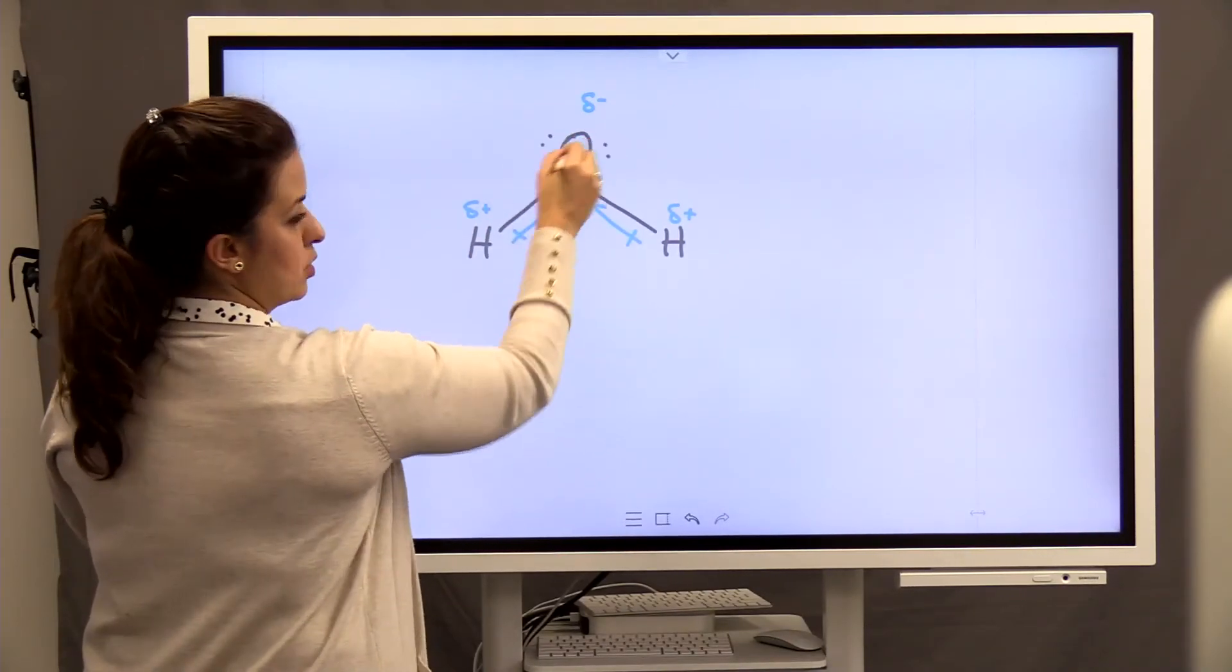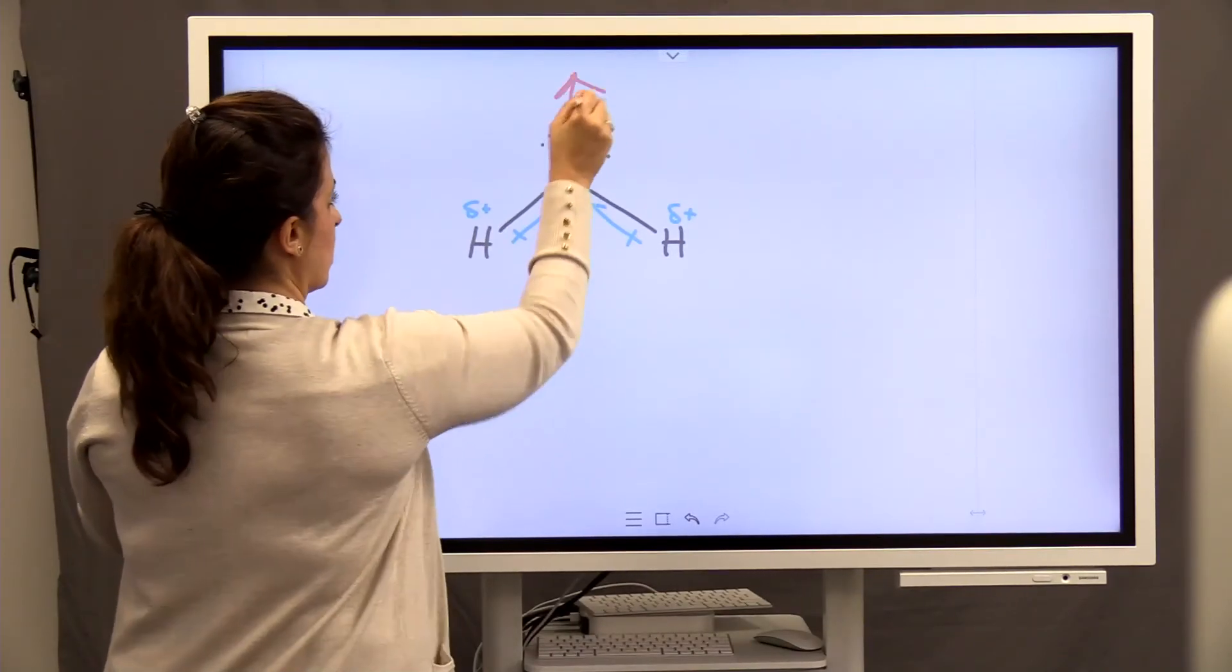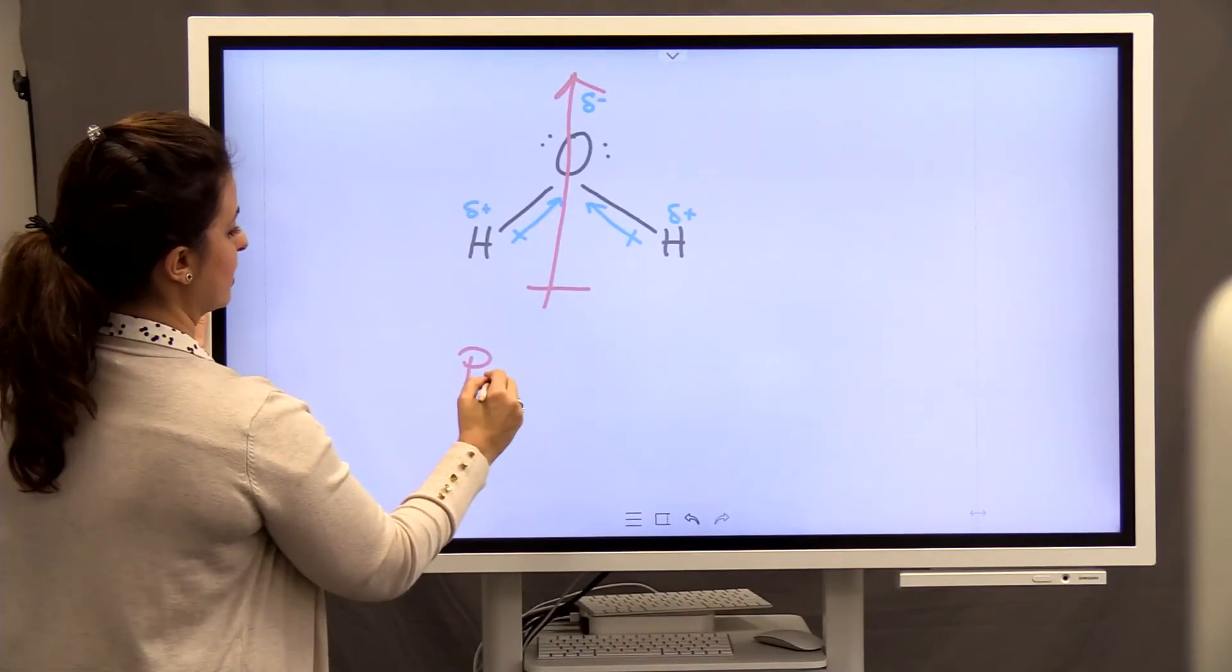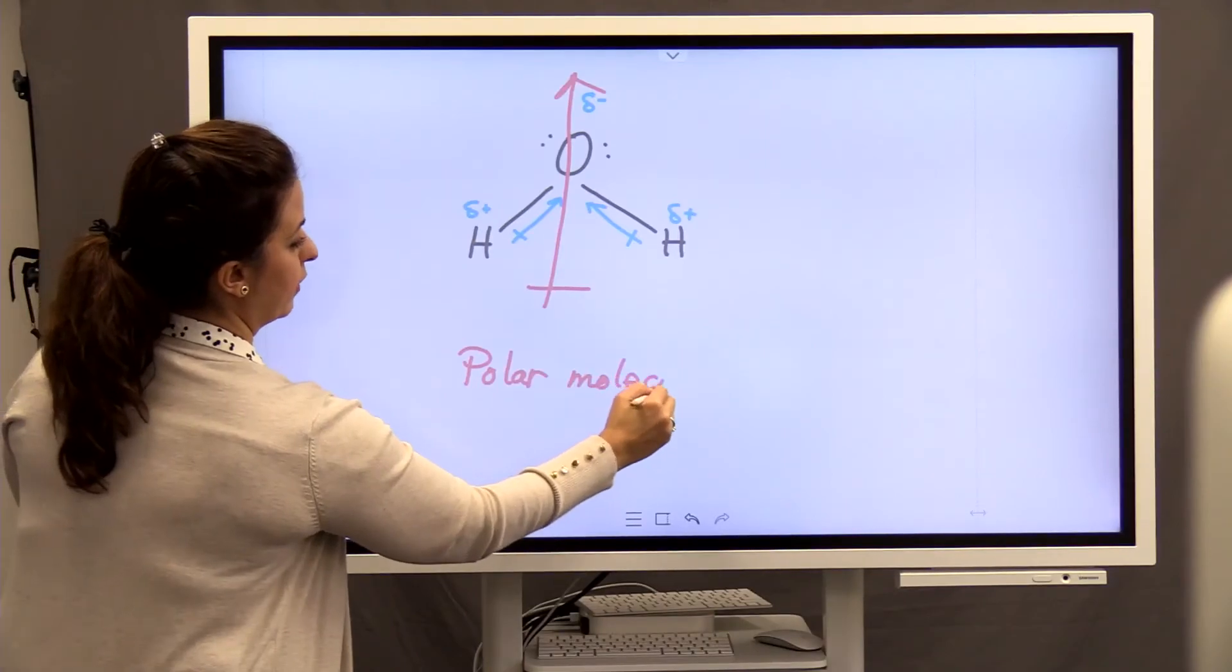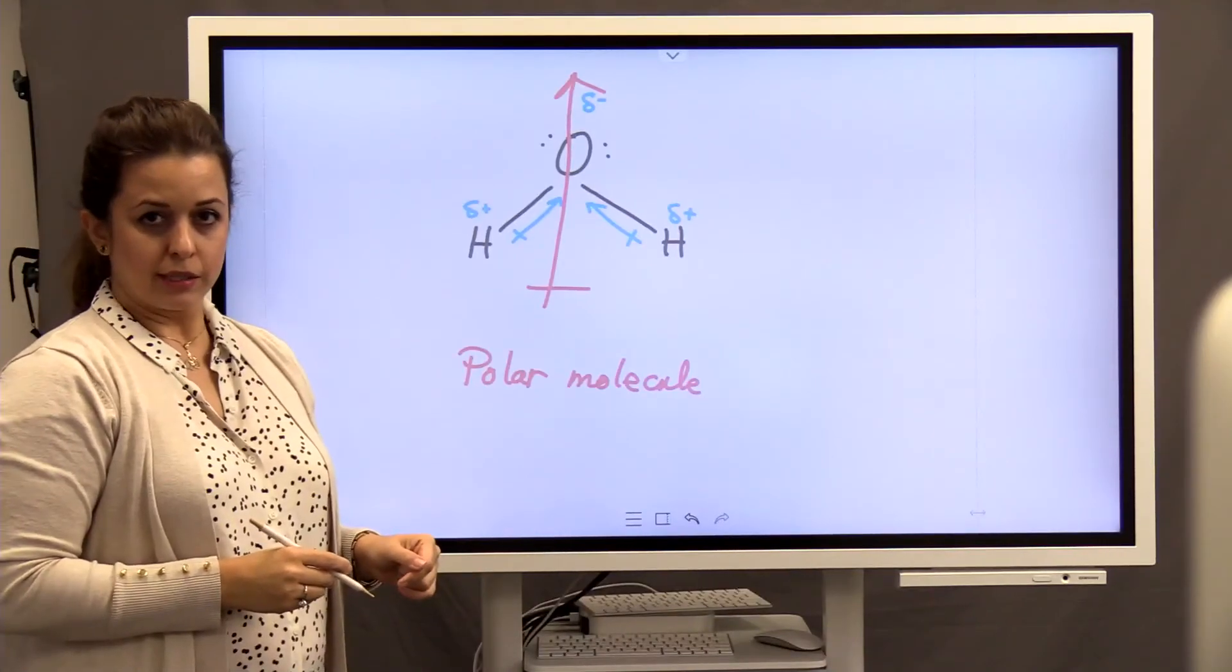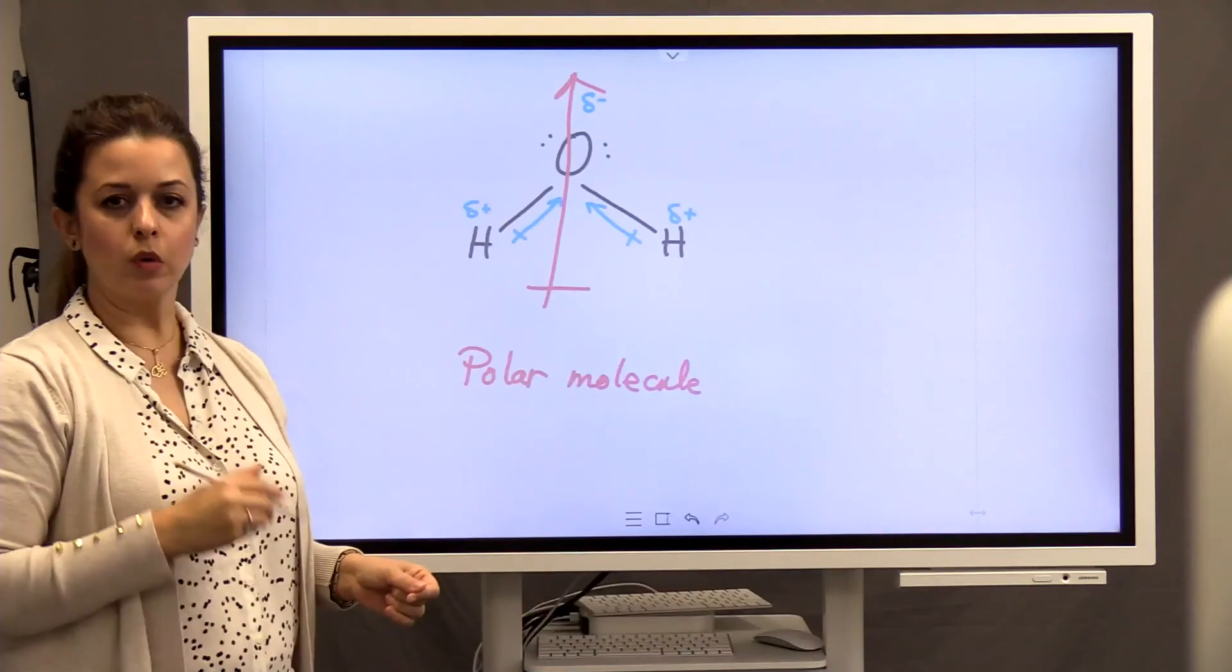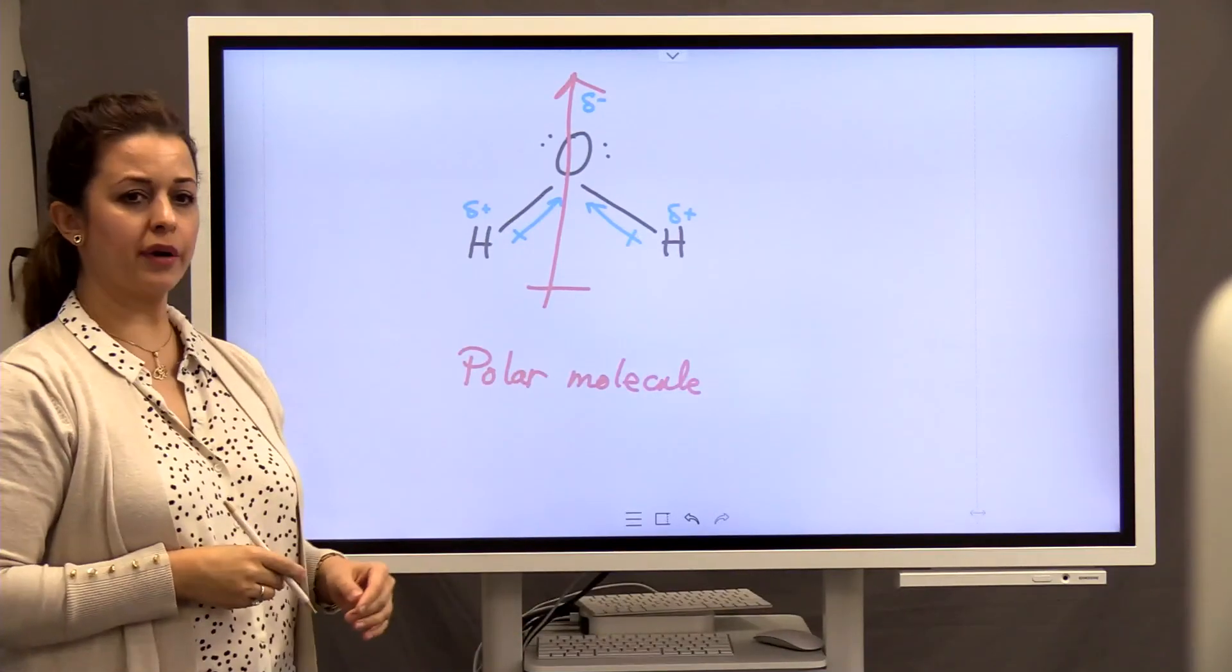Oxygen is partially negative. So dipoles are towards oxygen. And also, these two non-bonding pairs make the dipole be a strong dipole towards the top of the molecule. So it's a very polar molecule. The polarity of water molecule gives it a lot of properties, such as being a very good solvent for most of the compounds.